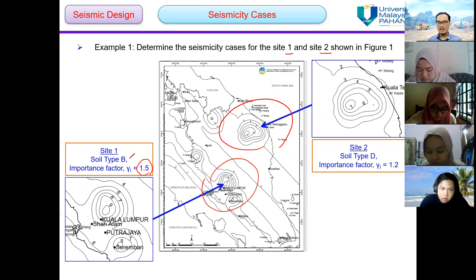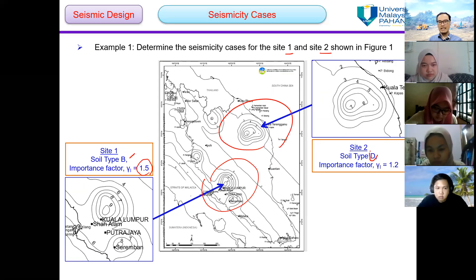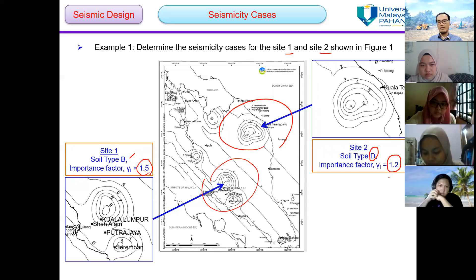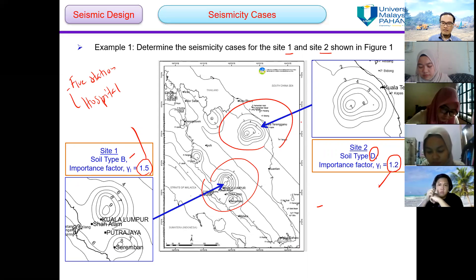Students answer: fire station. Good. Another building — hospital. Yes, good, hospital. For site 2, which is soil type D, the importance factor proposed for the building is 1.2. Let's say site 1 is a fire station and site 2 is a hospital. Can you give me an example of importance class 3? Students answer: school and condominium. Good.